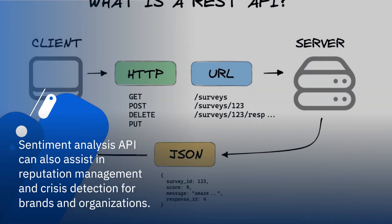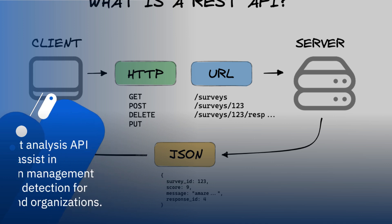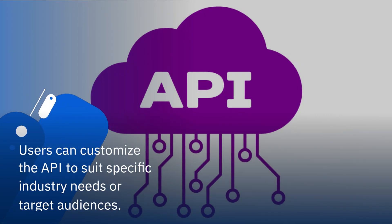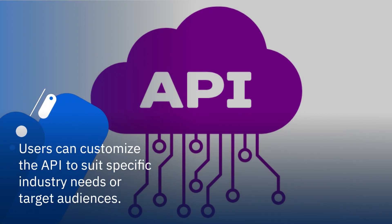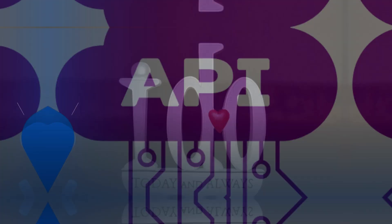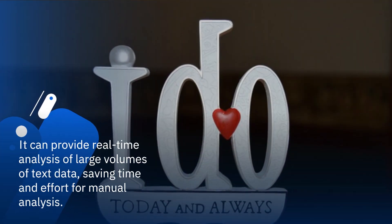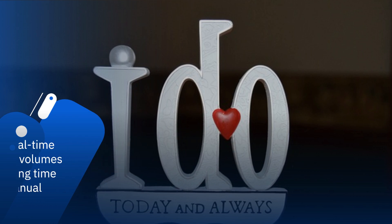Sentiment Analysis API can also assist in reputation management and crisis detection for brands and organizations. Users can customize the API to suit specific industry needs or target audiences. It can provide real-time analysis of large volumes of text data, saving time and effort for manual analysis.